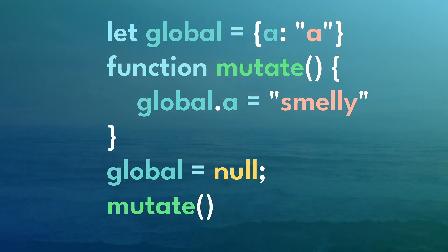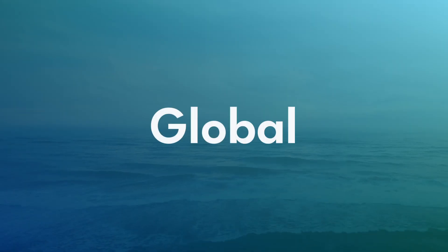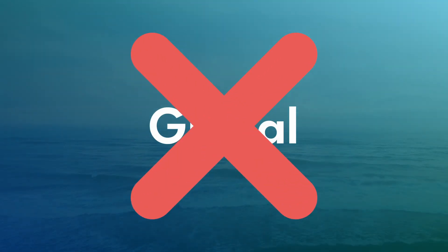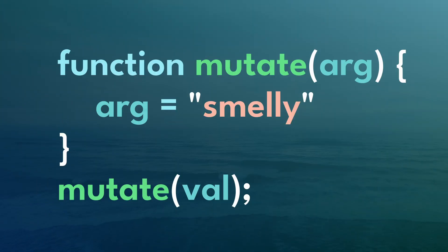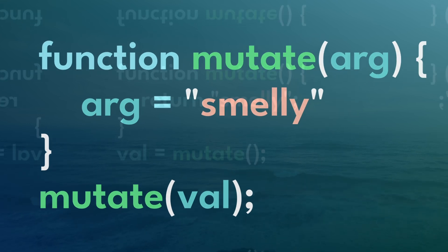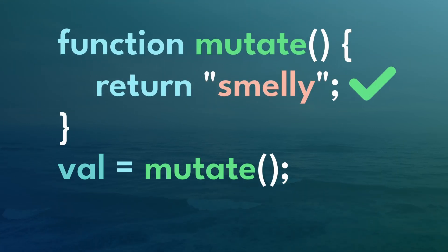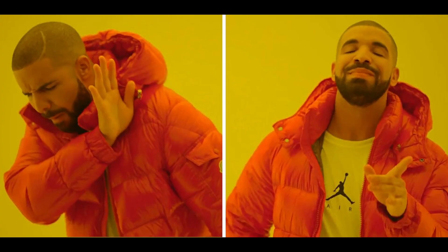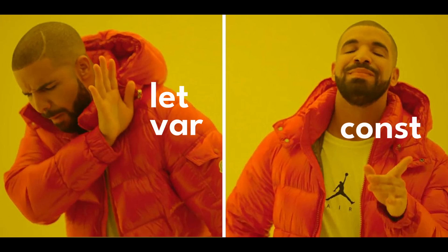Fortunately, these are easy to fix. First off, avoid global variables where possible. Instead of mutating the arguments, try returning a value from the function instead. And as a general rule, stay away from let and var and use constants instead.